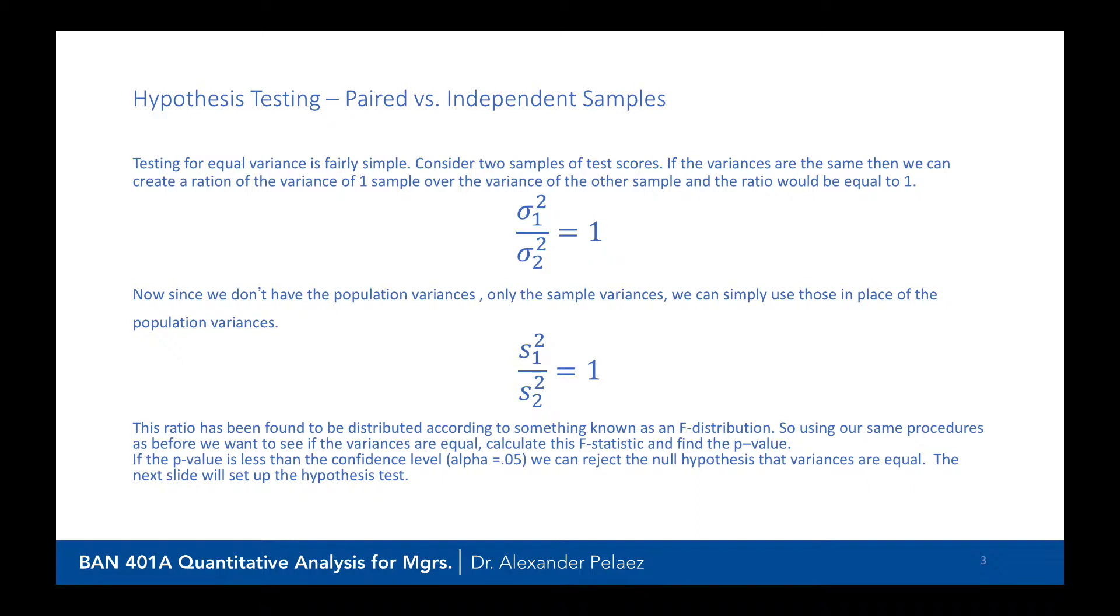Now, since we don't have population variances, we don't know the exact population variance of the two curves, we could only use the sample variances. But again, the same holds. We could take the first sample variance divided by the second sample variance and it should be equal to one.